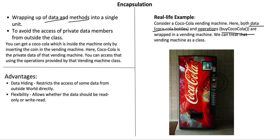The bottles represent the data, and buying Coca-Cola represents the operations — inserting coins and selecting bottles — all wrapped in one class. This is the wrapping up of data and methods into a single unit, which is encapsulation.